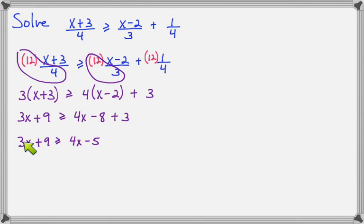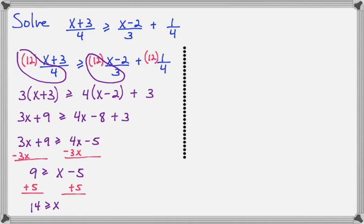And now I have to solve. I have both kinds of terms on both sides of the equal mark. So I'm going to do minus 3x on both sides, and then plus 5 on both sides. And that gives me 14 is greater than or equal to x. If I turn it around so that x is on the left, it will say x is less than or equal to 14.